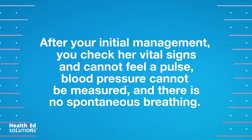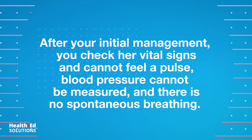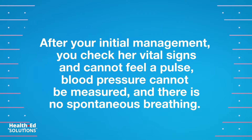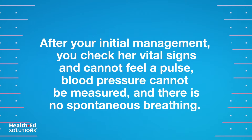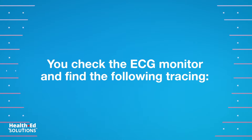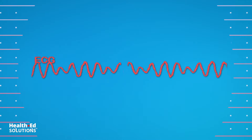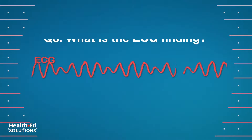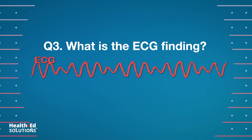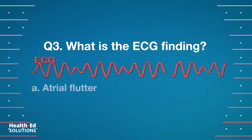After your initial management, you check her vital signs and cannot feel a pulse. Blood pressure cannot be measured and there is no spontaneous breathing. You check the ECG monitor and find the following tracing. Question 3: What is the ECG finding?